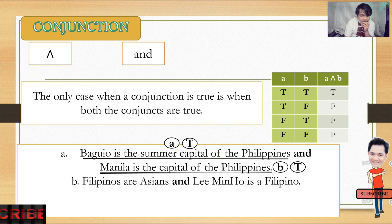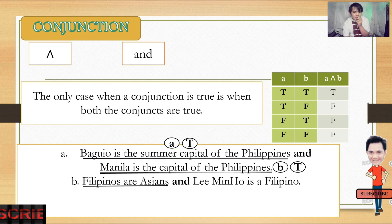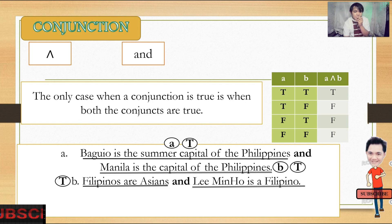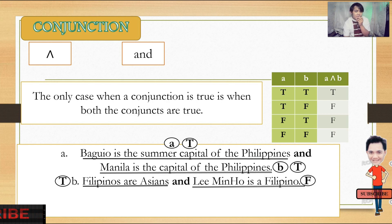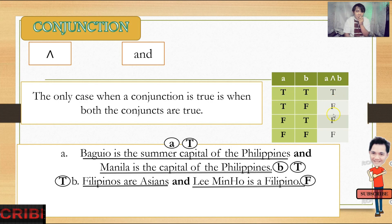More example: 'Filipinos are Asians and Liminghu is a Filipino.' A is 'Filipinos are Asians' — that's true. B is 'Liminghu is a Filipino' — that's false. According to the truth table, true and false gives false.